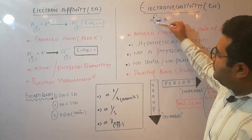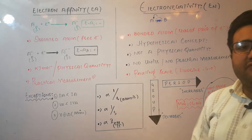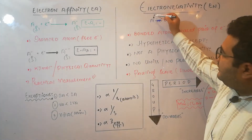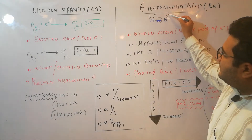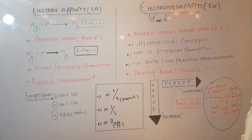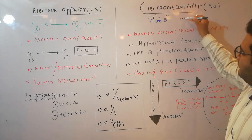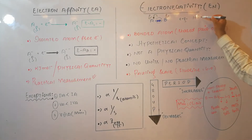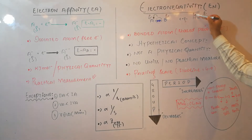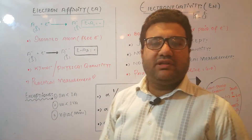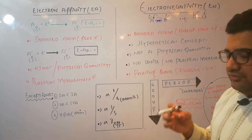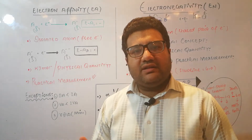So the ability of atom A to attract the shared pair of electrons is more than atom B, meaning the electronegativity of A is greater than B. The more electronegative element carries a delta negative (partial negative) charge, while the less electronegative element carries a delta positive (partial positive) charge. For example, in HCl, chlorine has greater electronegativity than hydrogen, so chlorine is partial negative and hydrogen is partial positive. Electronegativity is the ability of an atom to attract the shared pair of electrons towards itself.